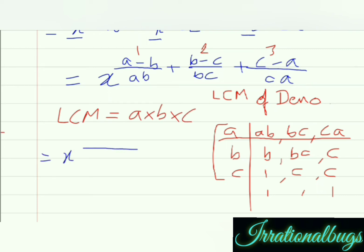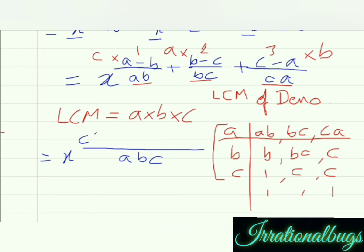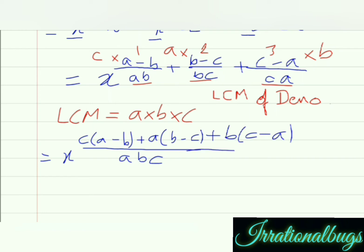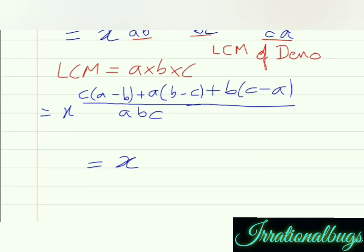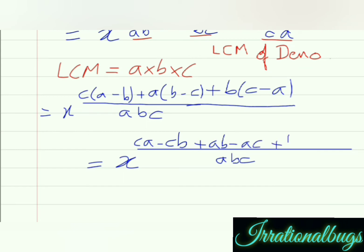तो denominator हमारे पास आ गया abc. अब first term है (a minus b) upon ab — abc तब बनेगा जब यह c से multiply होगा. Similarly, next में bc का abc तब बनेगा जब यह a से multiply होगा. And ca का abc तब बनता है जब यह b से multiply होता है. So we can write: c multiplied by (a minus b) plus a multiplied by (b minus c) plus b multiplied by (c minus a). Further bracket open करते हैं: ca minus cb plus ab minus ac plus bc minus ba.